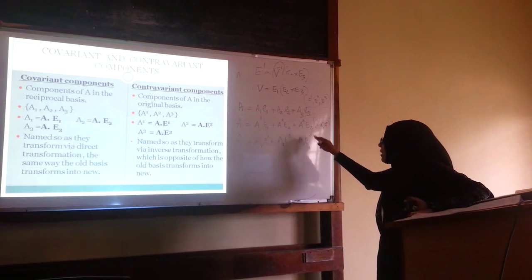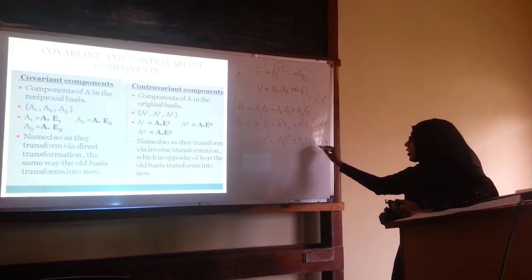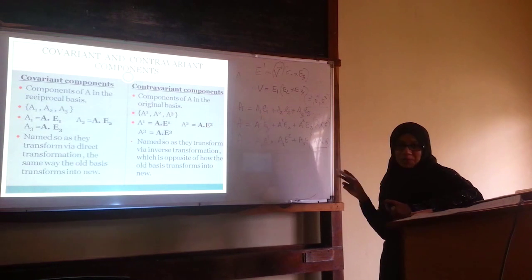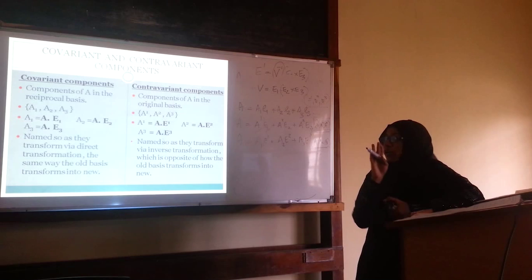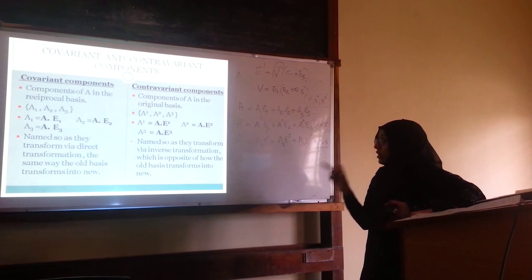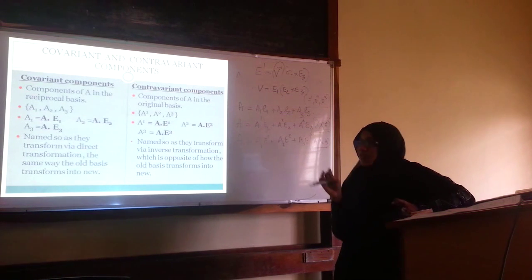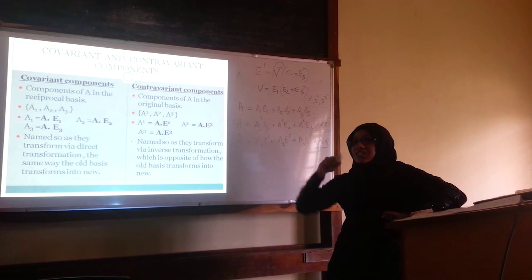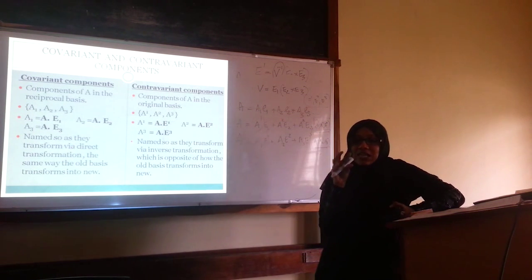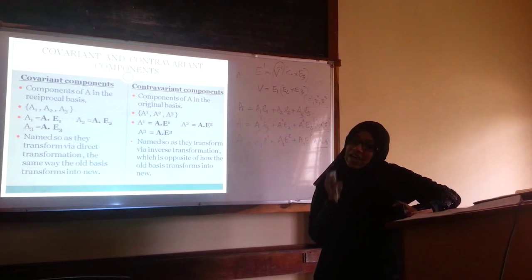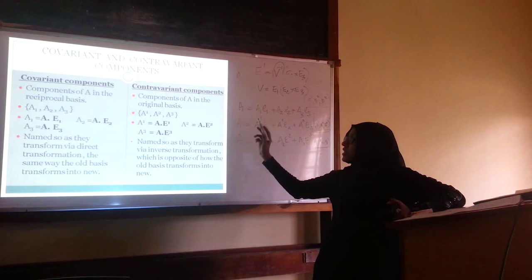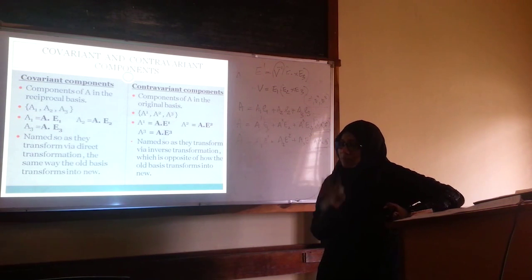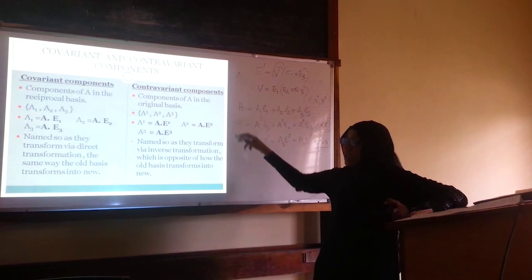The components of A in the reciprocal basis are called the covariant components, and the components of A in the original direct basis are called the contravariant components. Under a coordinate transformation, covariant components transform in the same way as the original basis transforms, whereas contravariant components transform in the inverse or opposite way to how the basis transforms.